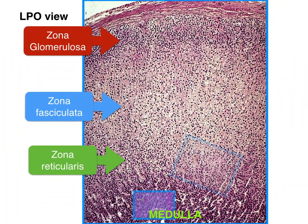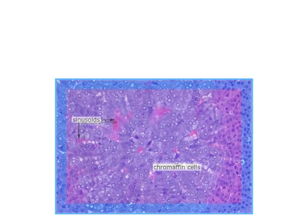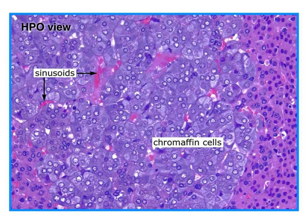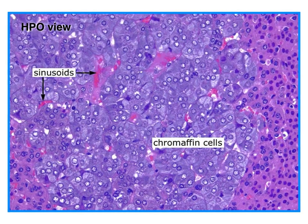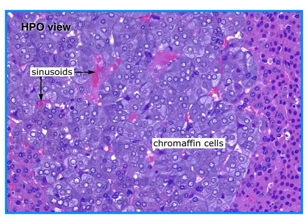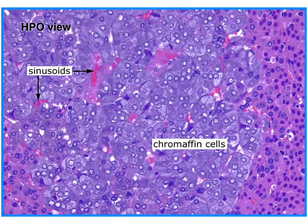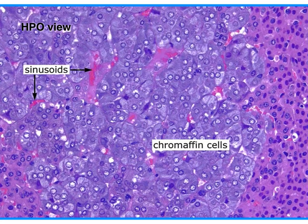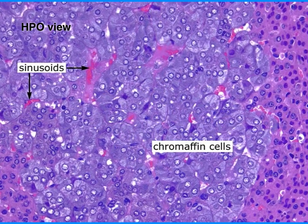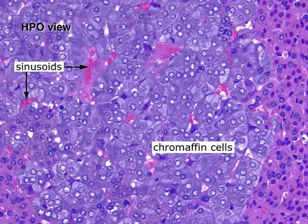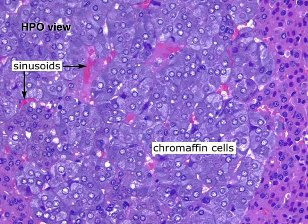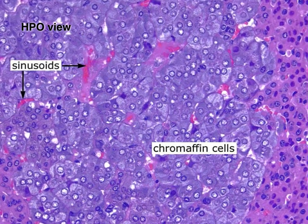The adrenal medulla is the innermost portion of the gland. It shares an embryological origin with the sympathetic nervous system. Its cells possess abundant cytoplasmic granules that contain stored peptide hormones and catecholamines. These cells are frequently called chromaffin cells because they can be stained with chromium salts.